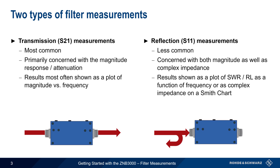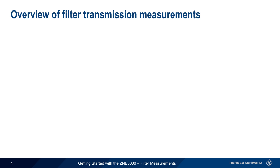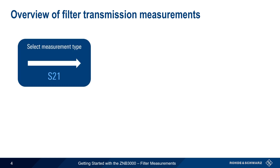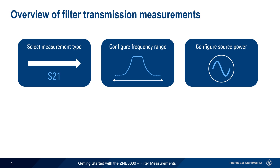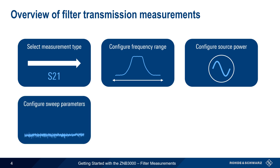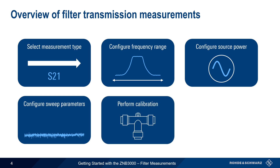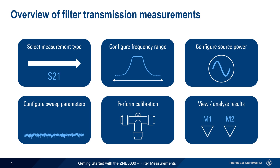In this presentation, we'll look at both types of measurements, beginning with the more common transmission measurements. There are six basic steps in making filter transmission measurements: selecting transmission as the measurement type, configuring the measurement frequency range, configuring the source power, configuring sweep parameters such as number of trace points and IF bandwidth, performing an appropriate calibration, and viewing and analyzing the results. Over the next few minutes, we'll walk through this process step by step.